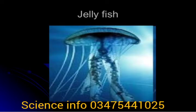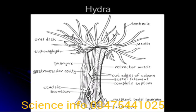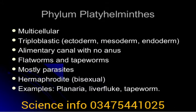Hydra reproduces asexually by formation of buds, which then separate and develop into individual organisms. Obelia is also a well-known coelenterate.